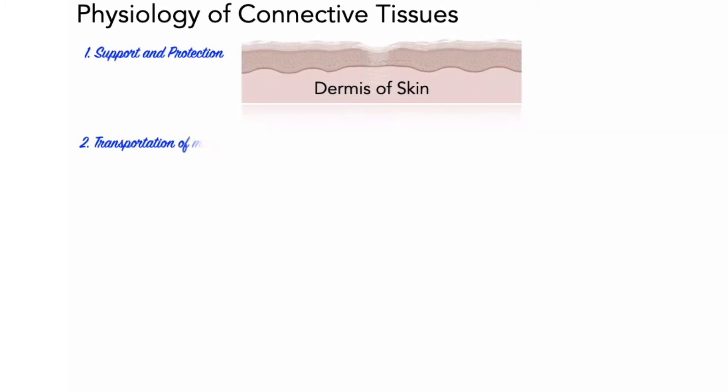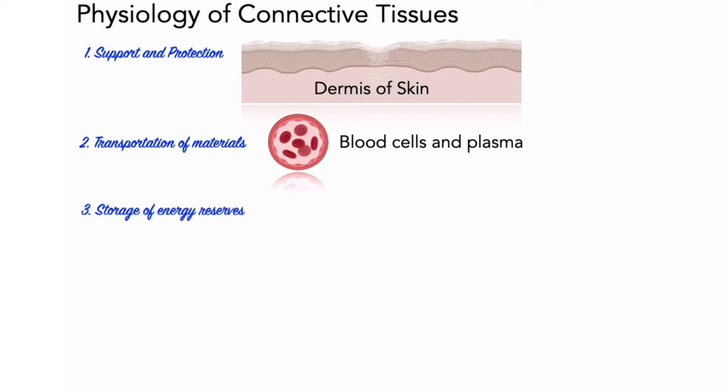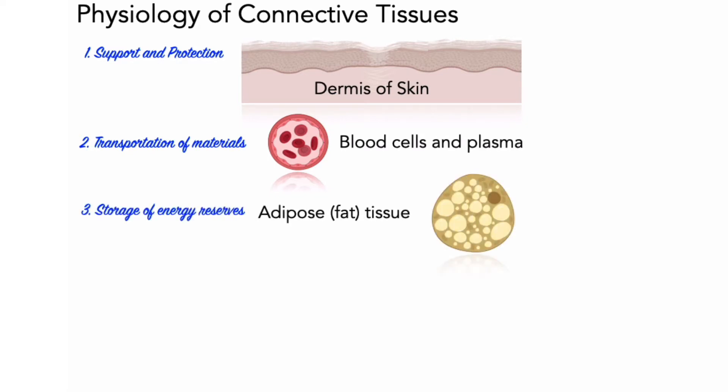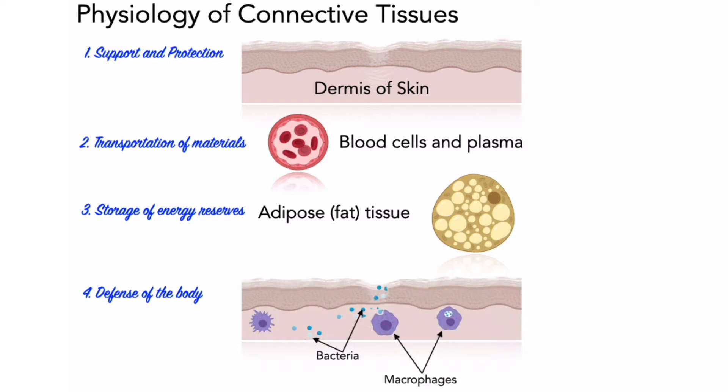When it comes to the physiology of connective tissues — what do connective tissues do? Seeing as connective tissue cell types can be very distinct, it should not be surprising that connective tissues play many distinct functions. A few notable connective tissue functions include support and protection, transportation of materials, storage of energy reserves, and defense of the body. No single cell type plays all of these distinct roles.